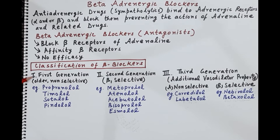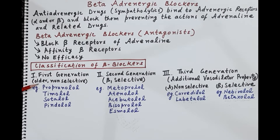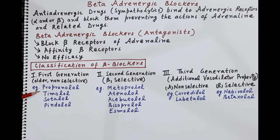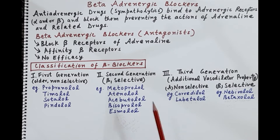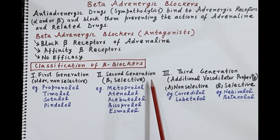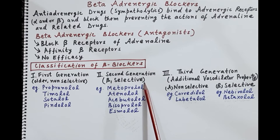Coming to the classification of beta blockers: first generation beta blockers are the older molecules and they are non-selective. As we know, beta receptors are of three types — beta 1, beta 2, and beta 3 — so these first generation non-selective older beta blockers block beta 1, beta 2, as well as beta 3 receptors. Examples are propranolol, timolol, sotalol, and pindolol.